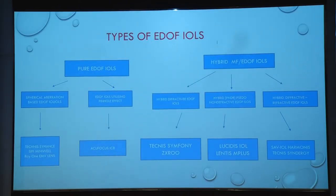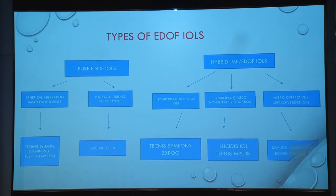What are the types of EDOF lenses? There are pure EDOF lenses and hybrid EDOF lenses. Pure EDOF lenses are aberration-based, while hybrid lenses are based on diffractive, refractive, or pseudo non-diffractive beam refractive technology. They are also classified as lenses with rings and without rings.